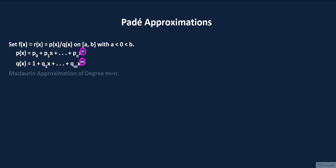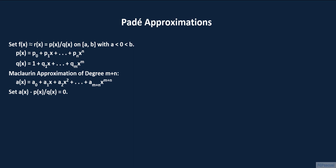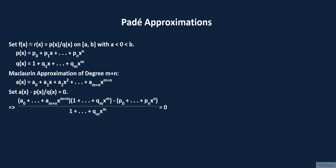In order to find the Padé approximation, we consider the degree m plus n Maclaurin approximation of f of x. Let a of x be this Maclaurin approximation: a of x is the sum of a sub 0, a sub 1 times x, all the way up to a sub m plus n times x to the m plus n power. To find the coefficients of p and q, we set a of x minus p of x over q of x identically equal to 0. The resulting system of equations for the coefficients includes: the sum from i equals 0 to k of q sub k minus i times a sub i equals p sub k, for k equals 0 all the way up to m plus n.